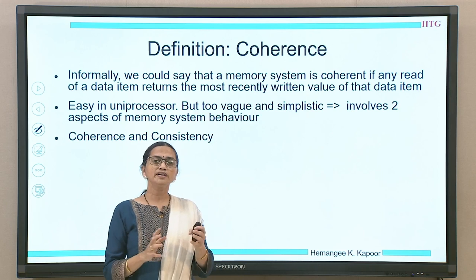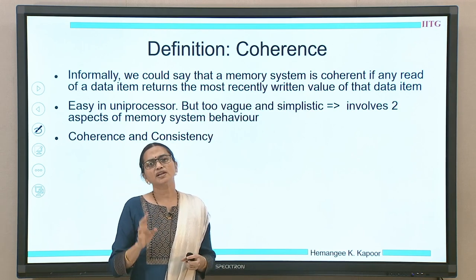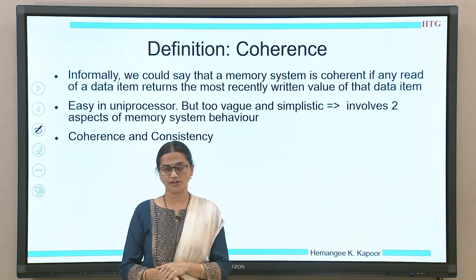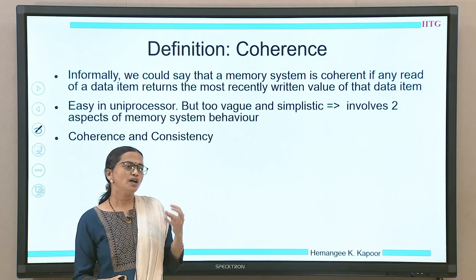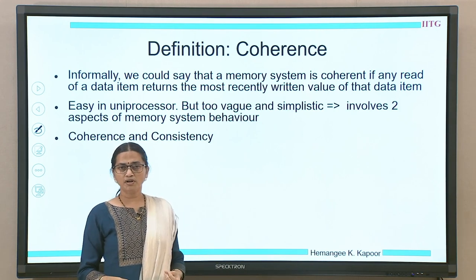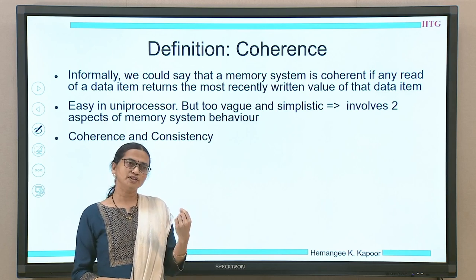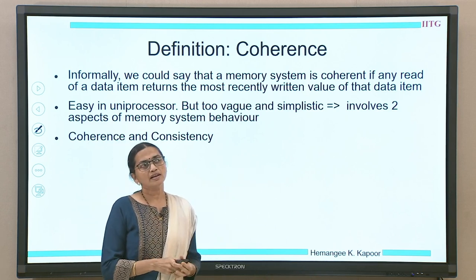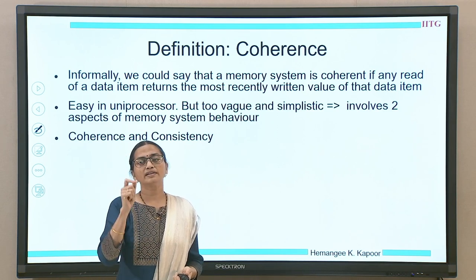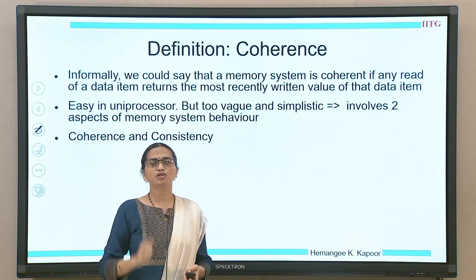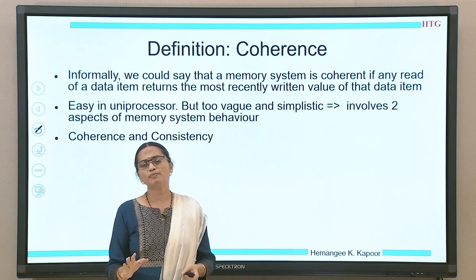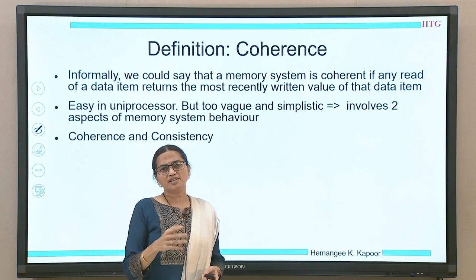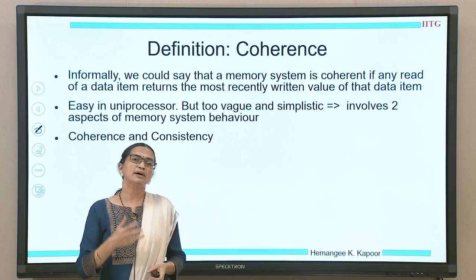When we are looking at a coherent view of the memory, what do we mean? We mean to say that any read done by a process should return the most recently written value to that location. This recently written value will definitely be the one in its own program order if this is the only program running, or it could be the value written by another process running on another processor. This previously written value will be in order in the hypothetical total order or the serialized order which we have constructed. In a uniprocessor, the most recently written value is the one in your own program order.